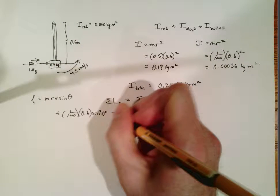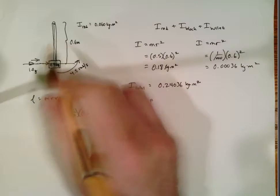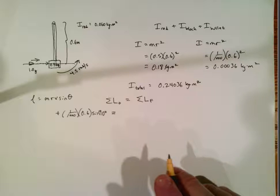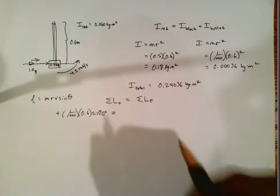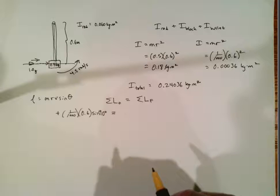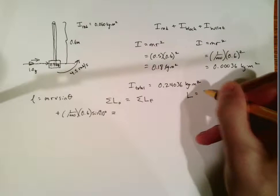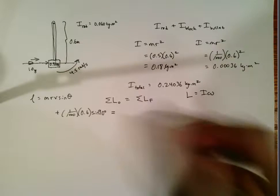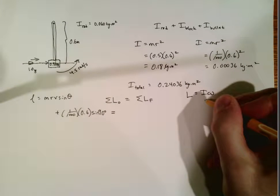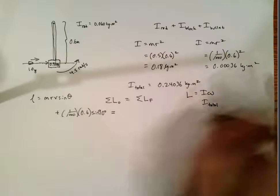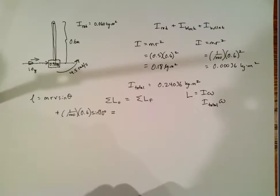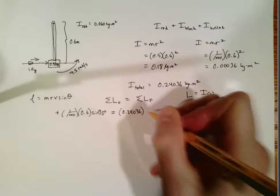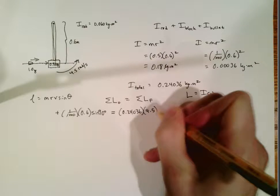So then afterwards the entire thing is all stuck together. The bullet is stuck inside the block and it's all moving as one object and it's rotating. It's not moving in a straight line. And so the formula for the angular momentum of a rotating or a spinning object is I omega. So I'm just going to take the total rotational inertia that we figured out times the omega that we were given. So the total rotational inertia is 0.24036 and the omega that we were given is 4.5.